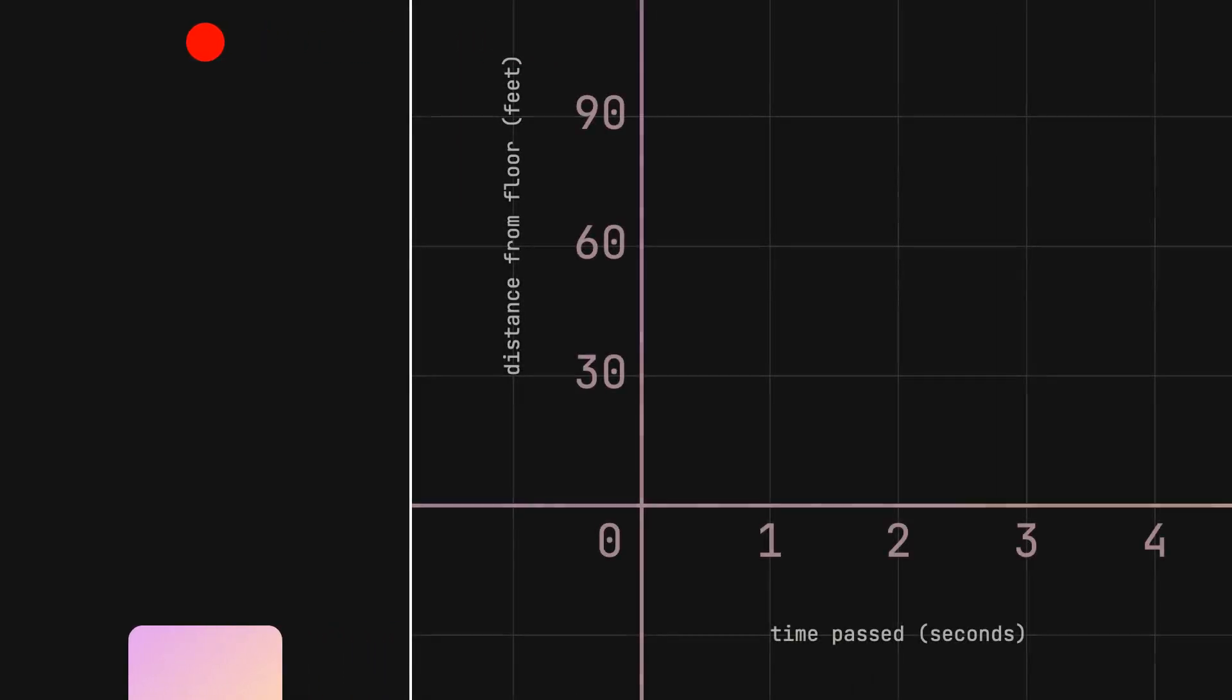Did you notice that the ball fell faster as time went on? Let's graph the ball's position as time goes on. Notice how the graph is curved. The curve shows that the ball's speed is increasing over time.